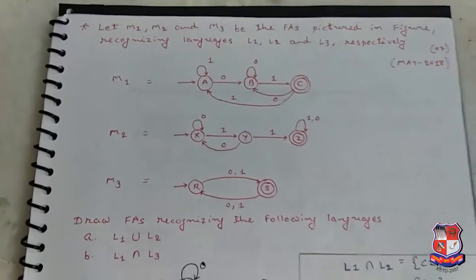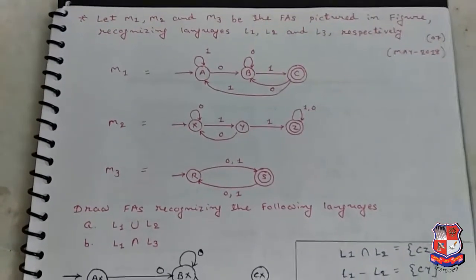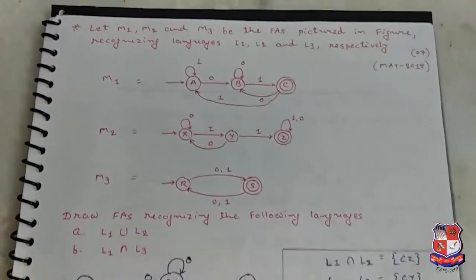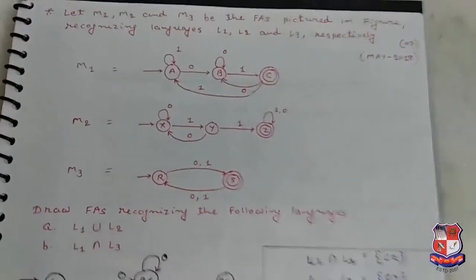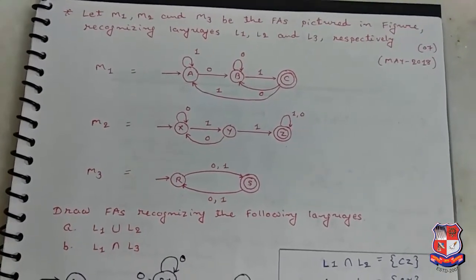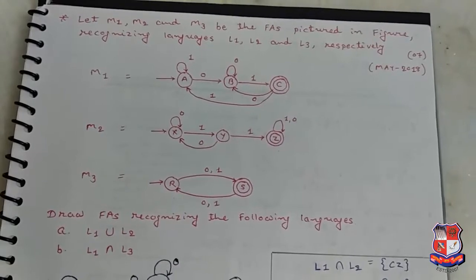Hello friends, today I discuss union, intersection, and complement of finite automata. Let M1, M2, and M3 be the finite automata pictured in the figure recognizing languages L1, L2, and L3 respectively.